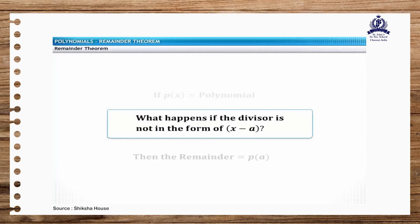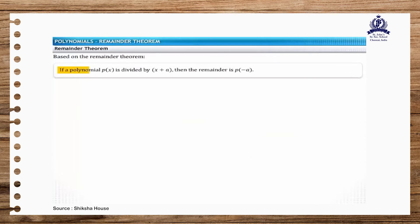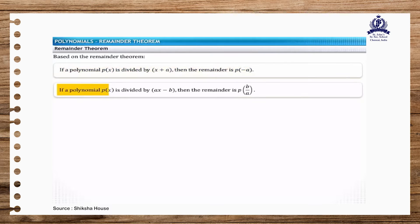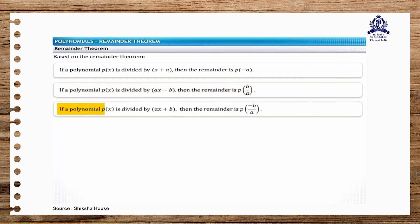The remainder theorem specifies the remainder in cases where the divisor is x minus a. However, there may be cases where the divisor does not appear in the form x minus a. In such situations, you can use the following guidelines: if p of x is divided by x plus a, the remainder is p of minus a; if divided by ax minus b, the remainder is p of b divided by a; if divided by ax plus b, the remainder is p of minus b divided by a.